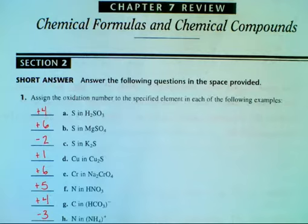Assign the oxidation number to the specified element in each of the following examples. Let's start with sulfur. Sulfur in H2SO3 is going to have a plus 4.